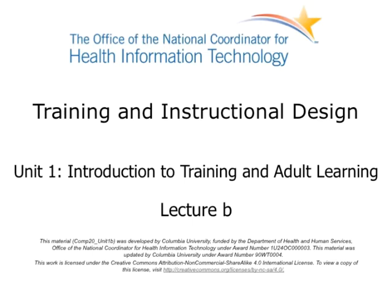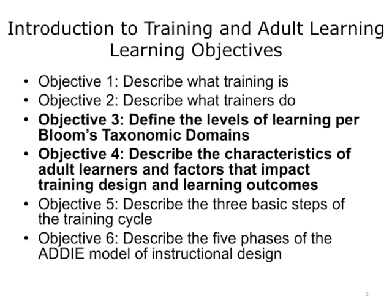Welcome to Training and Instructional Design. This will be an Introduction to Training in Adult Learning — Lecture B. The learning objectives for this unit are: one, define the levels of learning per Bloom's taxonomic domains; and two, describe the characteristics of adult learners and factors that impact training design and learning outcomes.